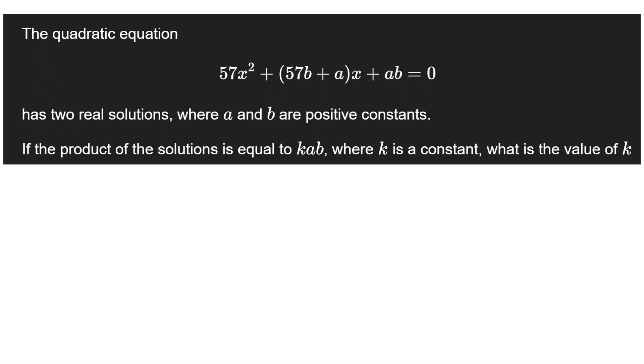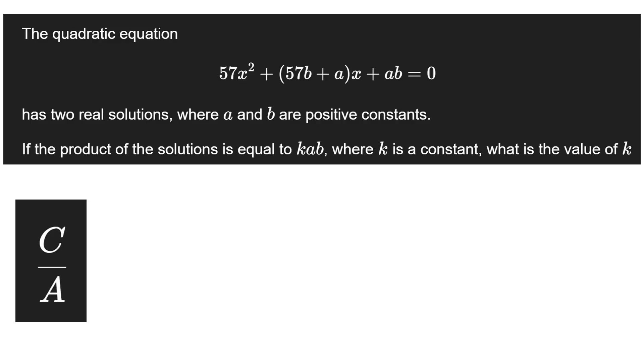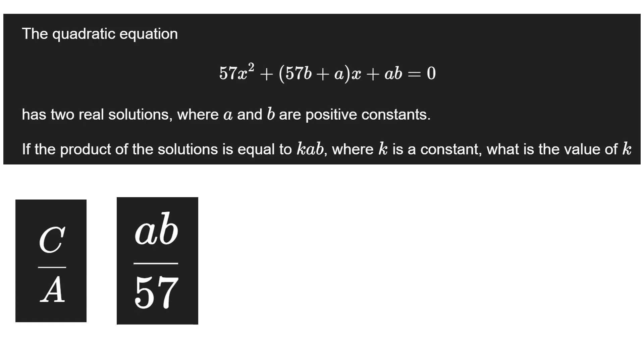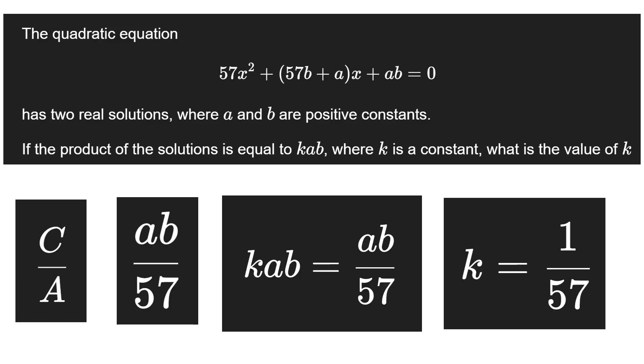Here's the problem with this type of question. It can take really long to go through and figure out the solutions and multiply them out, but in reality it's simply about knowing the formula. The formula for the product of solutions is c over a. In this question it's a b over 57. Solving this gives us k is equal to 1 over 57.